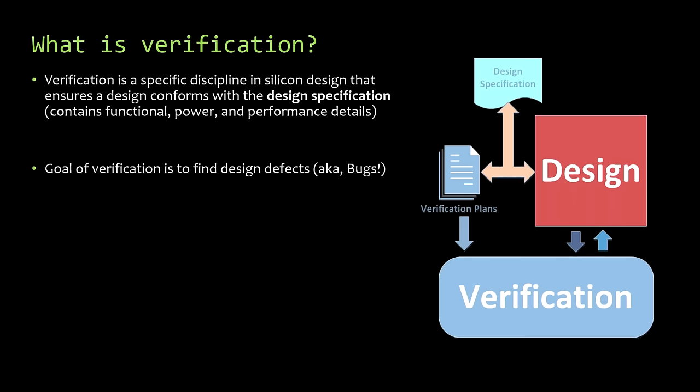Verification is a discipline within silicon design that ensures a design matches a specification. When hardware and CPUs are developed, you don't just have a functional specification — you also have a performance specification and a power specification, and all those need to be tested. If you build a processor that's slower than expected, it's just as worthless as if it had a bug. The goal of verification is to find defects early, because the earlier you find a bug in the design process, the cheaper it is to fix.